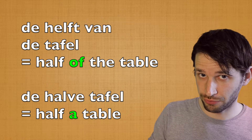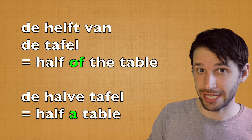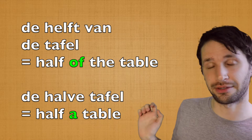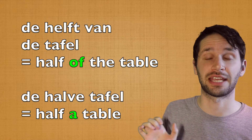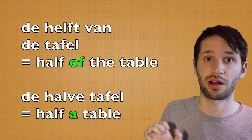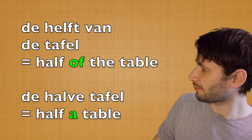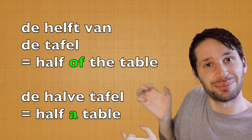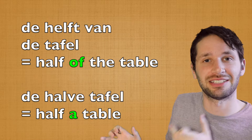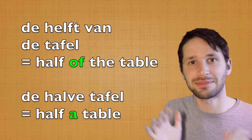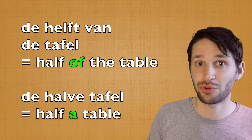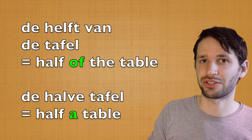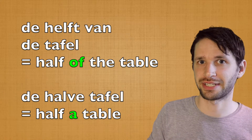What is also confusing is the translation as an adjective. For example, de halve tafel means half a table or half the table — the article goes in between the adjective and the noun, so that might be a little confusing. Watch out — put the article in front: de halve tafel, just like you would do for de grote tafel, the big table.